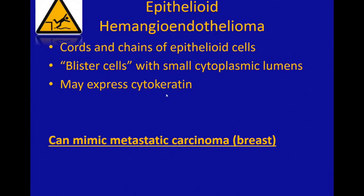They may also express cytokeratin, just like epithelioid angiosarcoma. So be very careful — it's easy to see a tumor like that in the skin, it's keratin positive, and easy to think it could be metastatic breast cancer or something like that. Additional immunostains using vascular markers can really help solve the problem.